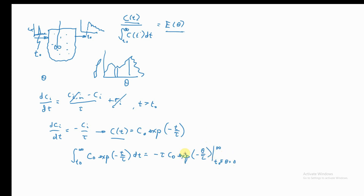Evaluating the limits: at infinity, exp(−∞) = 0, so that term is zero. At θ = 0, exp(0) = 1, so we get −τ·C-naught times (0 − (−1)), which gives τ·C-naught. So the integral of C over all time equals τ·C-naught.